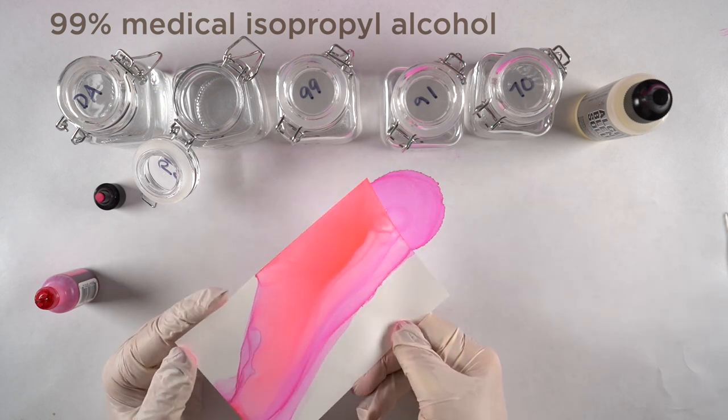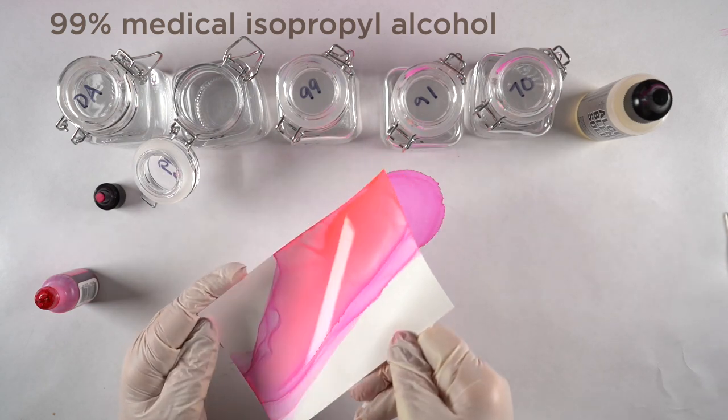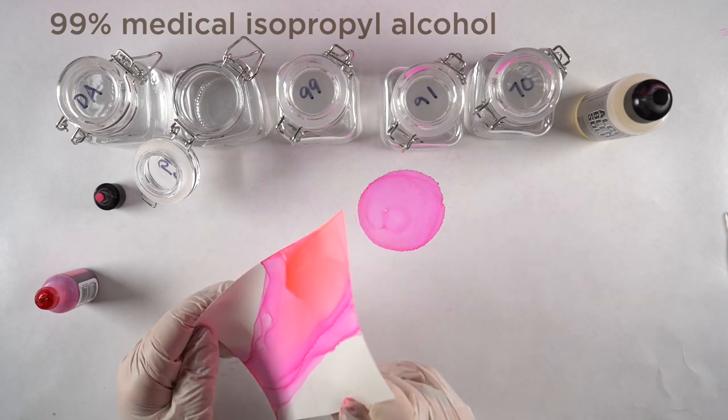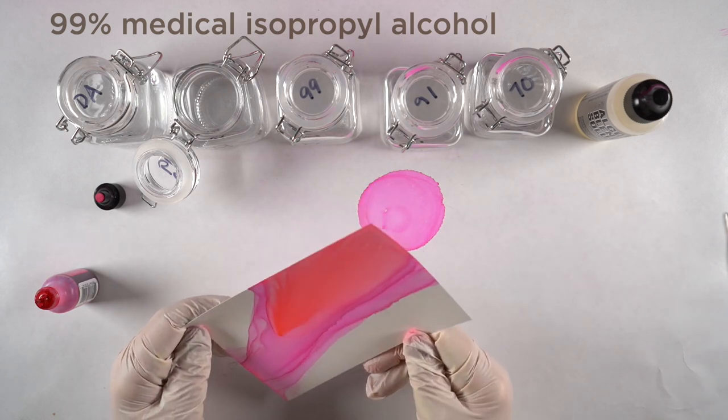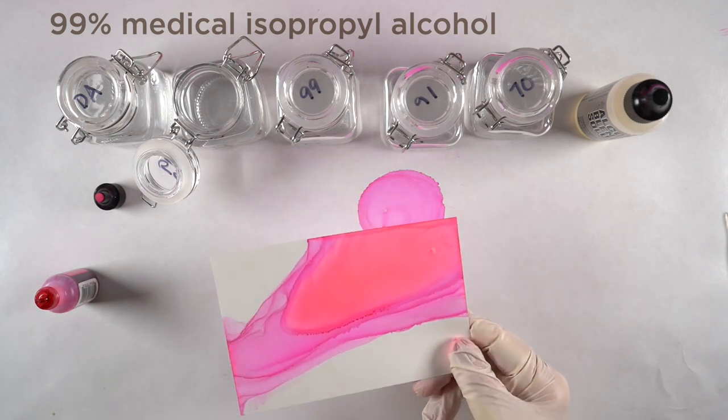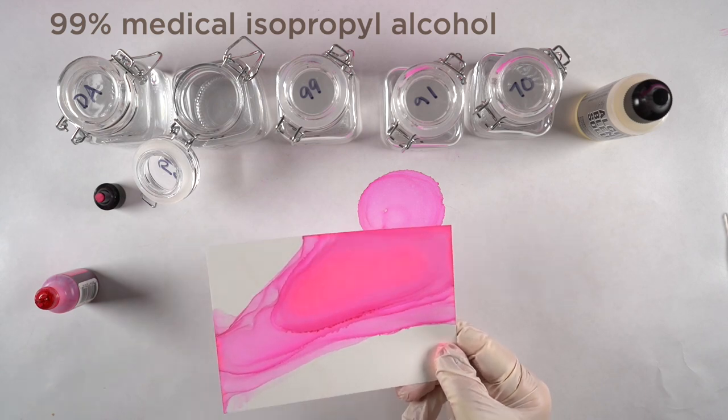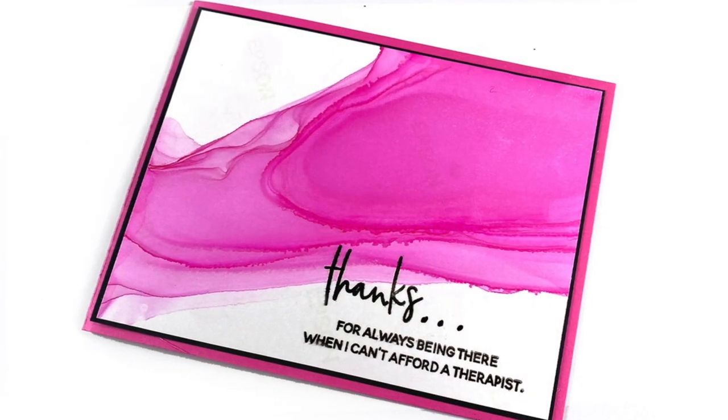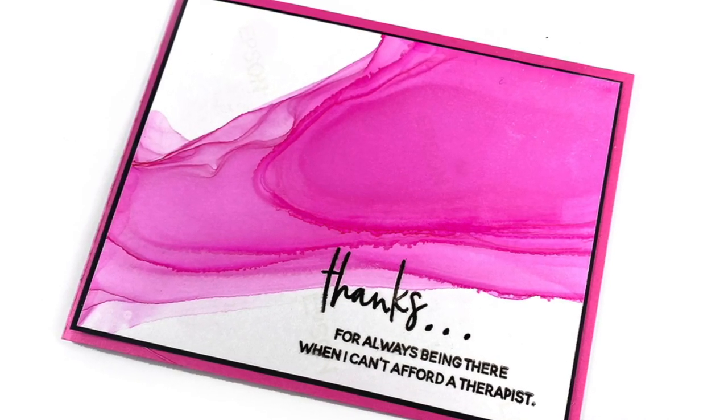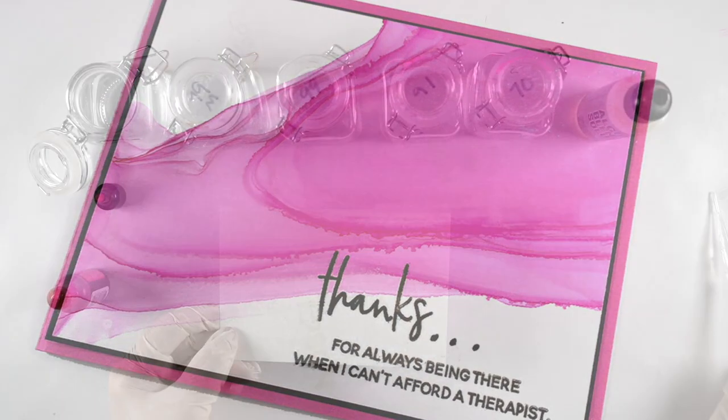That seemed to be the trick for me—not letting it run me but letting me run it, letting me be in control of it. You can also do this with multiple colors. What I would recommend would be to do a section like this in one color, get it completely dry, and then do just that section on the right. Just let it dry completely before moving on to the next one.